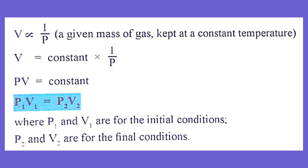Mathematical expression: V varies as 1/P. The formula gives us P1V1 = P2V2 conditions for a given mass of gas.